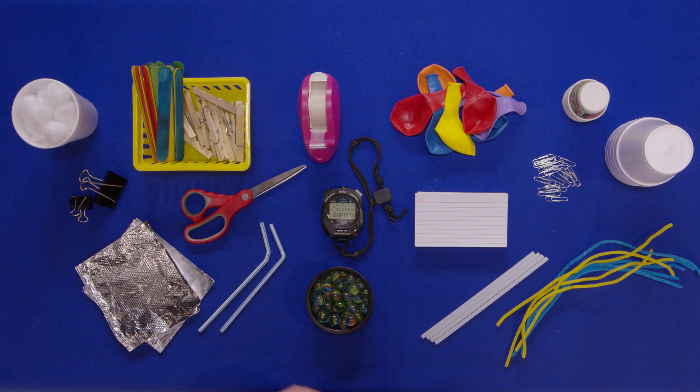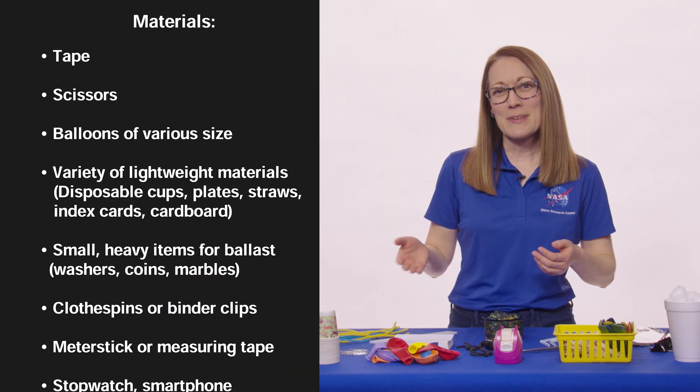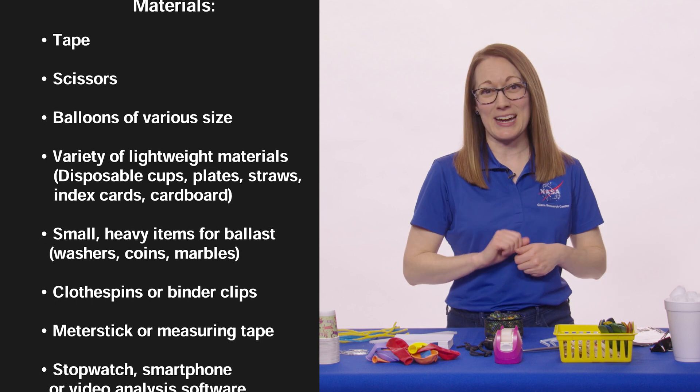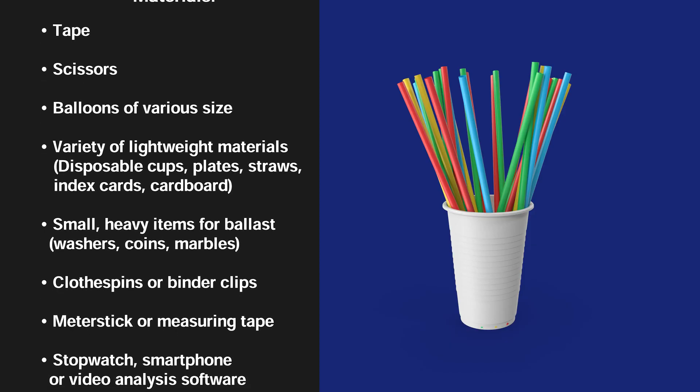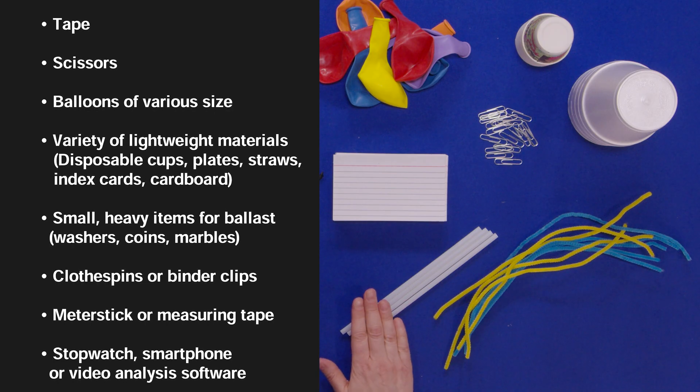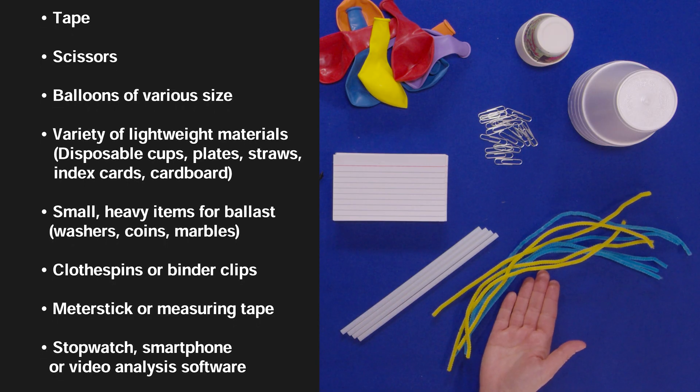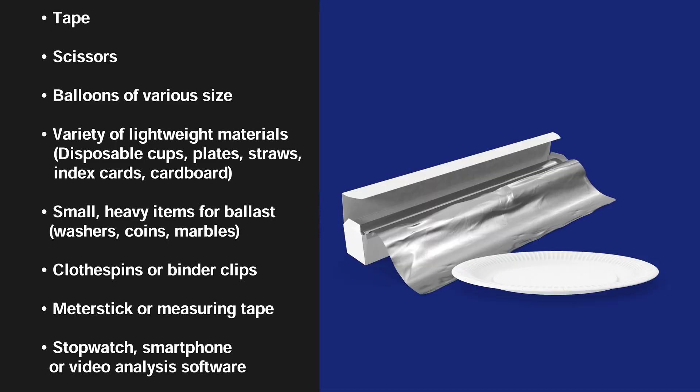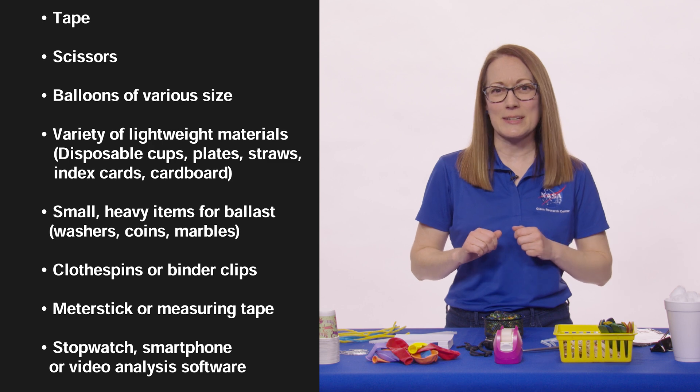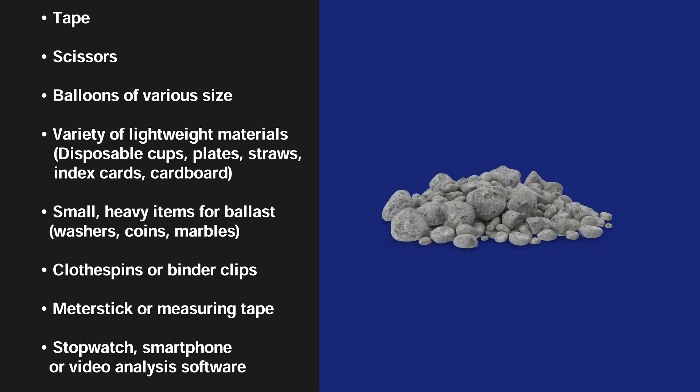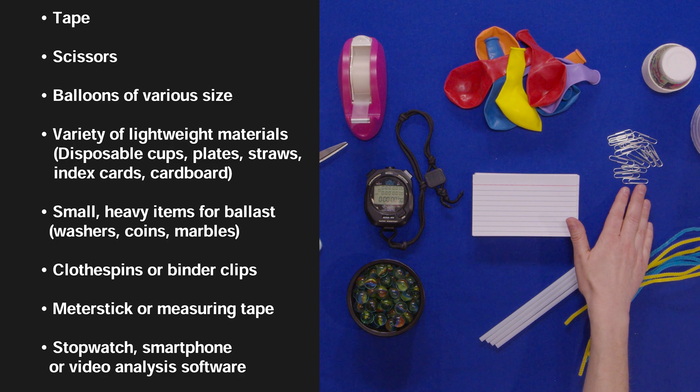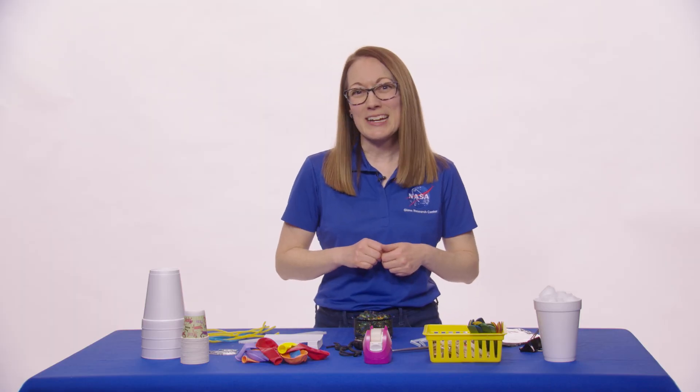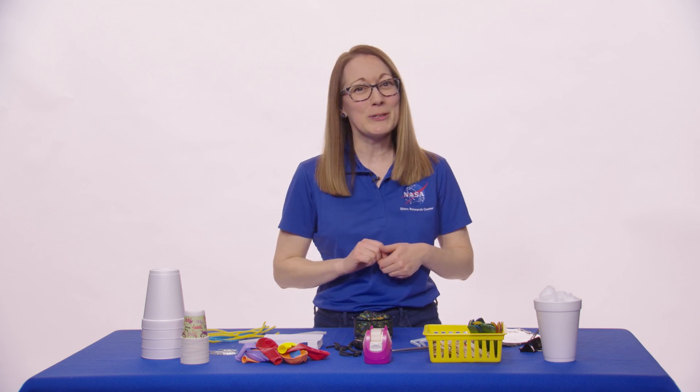To prepare, gather your materials. Remember, the materials are suggested. Feel free to substitute with materials you do have. For example, you can replace plastic straws with biodegradable straws or pipe cleaners. Foam cups or plates can be replaced by paper plates or aluminum foil. And the small heavy item options for ballast can be replaced with small rocks, stones, paper clips, nuts, bolts, or marbles. We encourage you to be creative with what you have available to you.